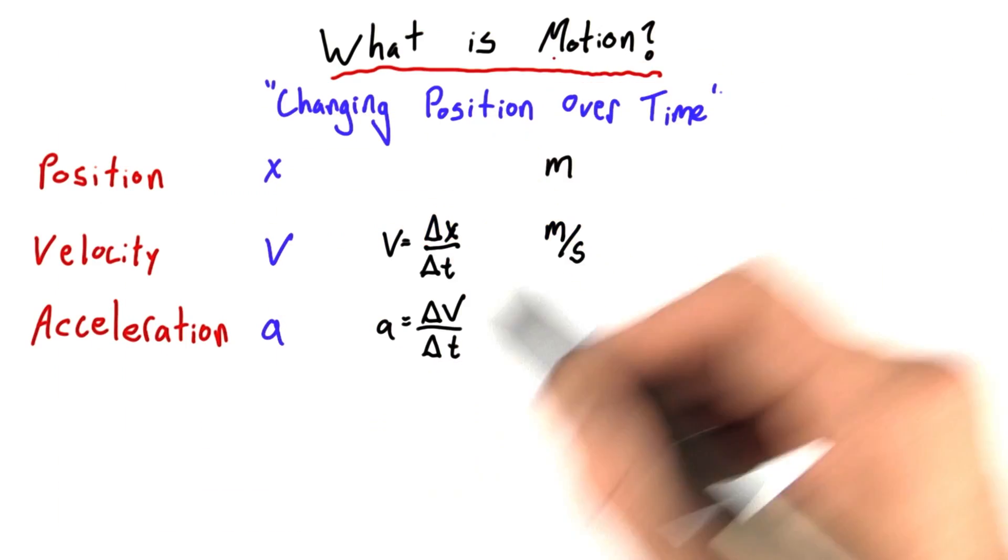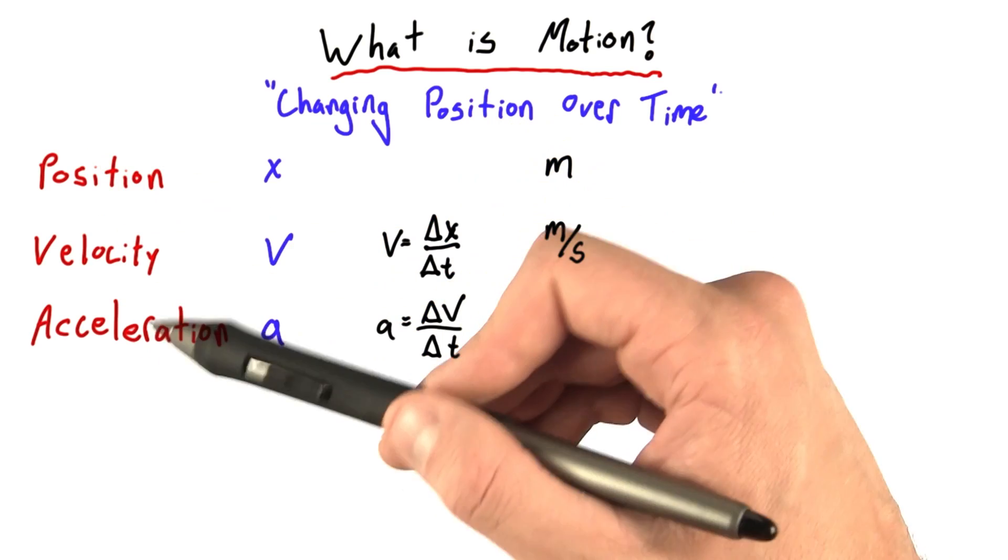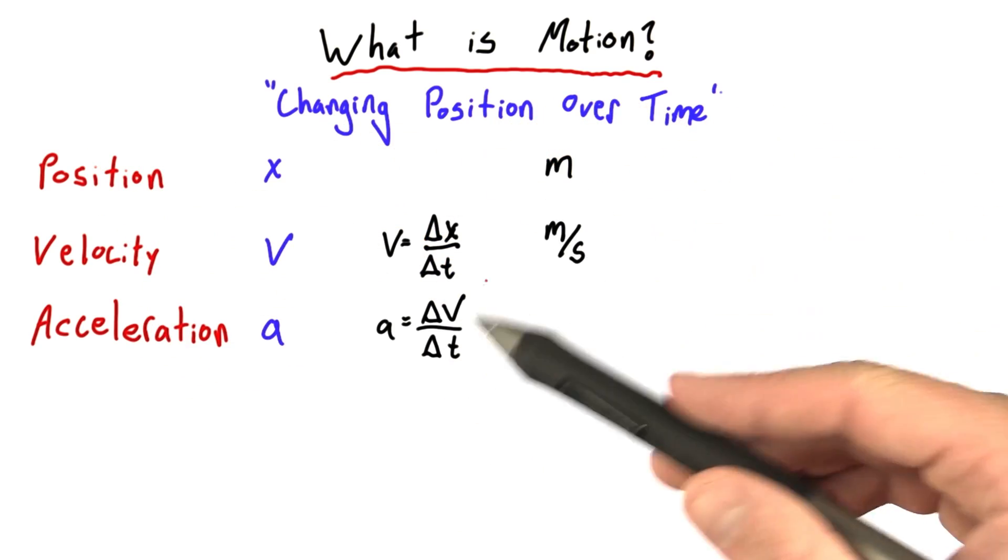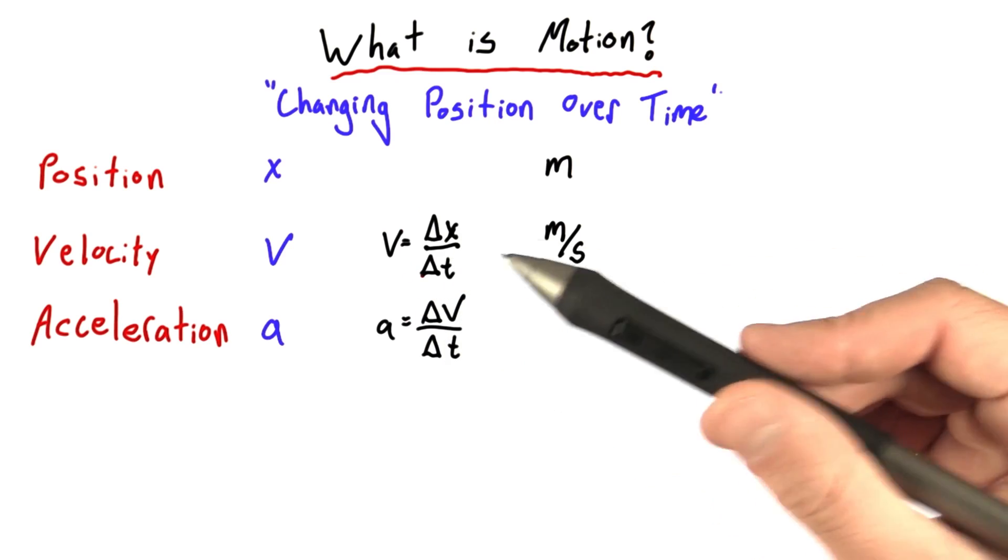So let's review what we've learned about motion. We've learned what position, velocity, and acceleration are, and these are the key words we use to describe motion. We've defined them in terms of each other.